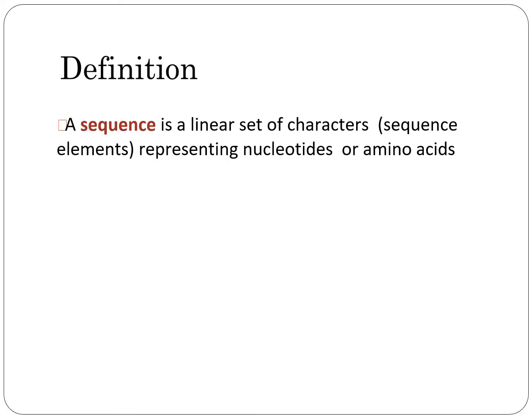Let's start with the definition. A sequence is a linear set of characters representing sequence elements — specifically nucleotides or amino acids. Nucleotides can be DNA or RNA, and there are 20 amino acids.